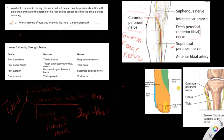The site of the injury is most likely at the head of the fibula, because at this level the common fibular nerve is very superficially located and it wraps around the head of the fibula.